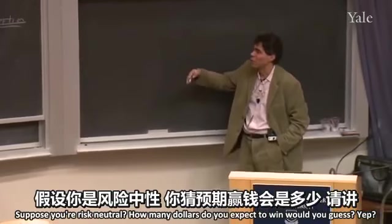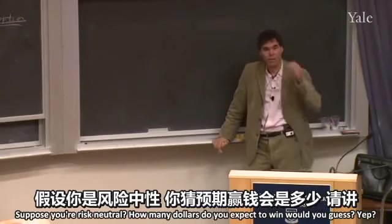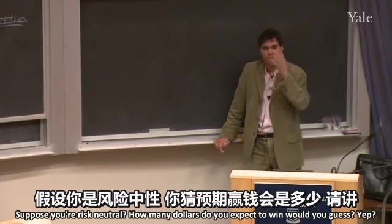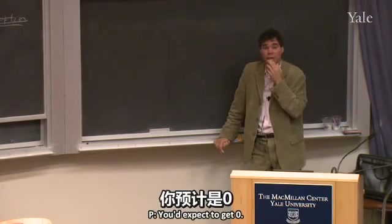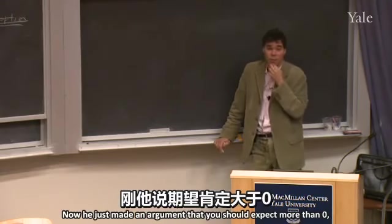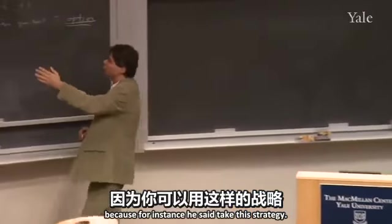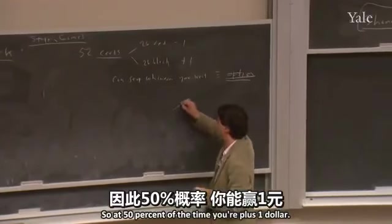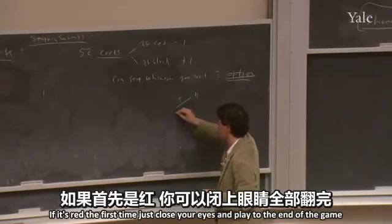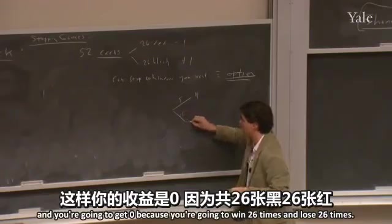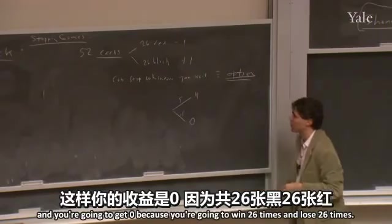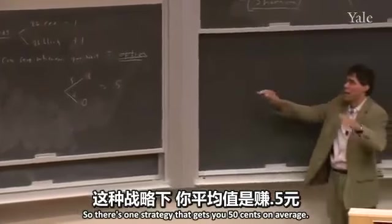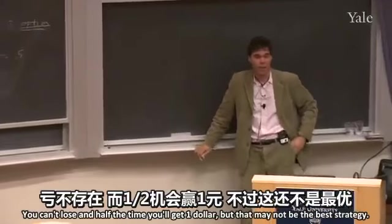You'd expect to get 0? He just made an argument you should expect more than 0. Take this strategy: pick a card; if it's black you win a dollar and quit — you're a dollar ahead. So with 50 percent of the time you're plus a dollar. If it's red the first time, just play to the end of the game and you'll get 0 because you'll win 26 times and lose 26 times — net zero. So that strategy gets you 50 cents on average. You can't lose and half the time you'll get a dollar. But that may not be the best strategy.